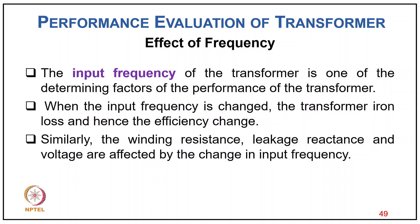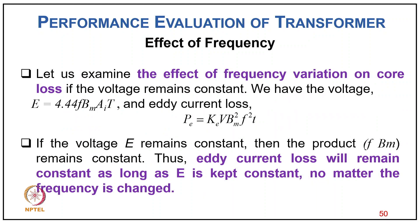The input frequency of a transformer is a determining factor for its performance. When input frequency changes, transformer losses and efficiency change. If voltage remains constant, E = 4.44 × Bm × Ai × T, so the product f×Bm remains constant. Therefore eddy current loss Pe = Ke × Bm² × f² × t² remains constant as long as E is kept constant, regardless of frequency change.